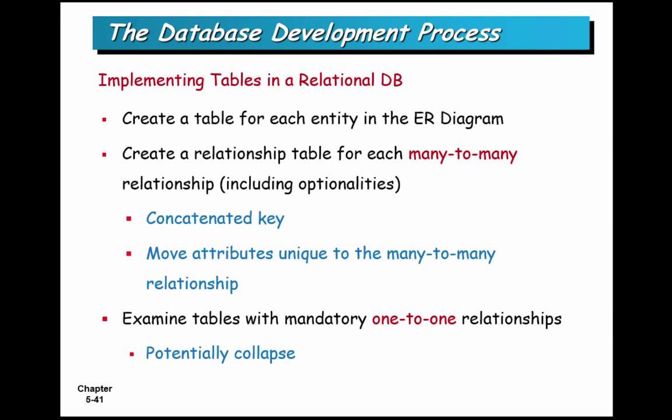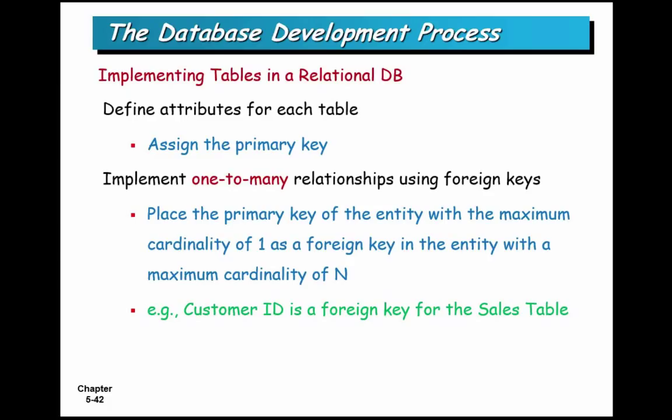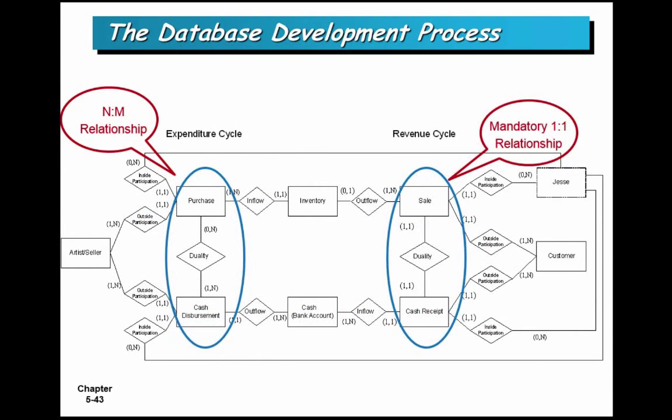So the first thing you do is you create a table for each entity. You create a relationship table for each many-to-many entity, including situations where there's an optionality. You might have to move some of your attributes to the relationship table, as you saw we did with price on that last example. And then you look at your mandatory one-to-ones and decide whether you want to link them into a single table. So you could actually combine, you could lose tables. Then you define your primary keys. You implement your foreign keys for the one-to-many relationships. You put the one side on the many. Put the one side on the many.